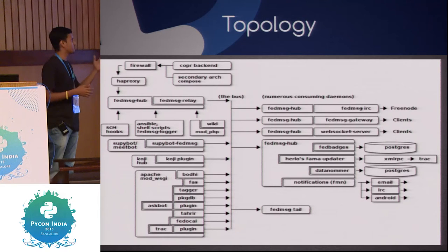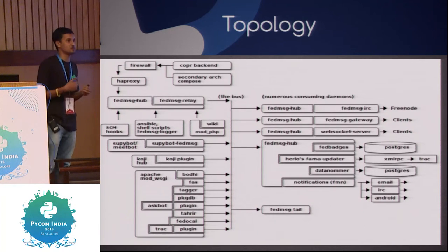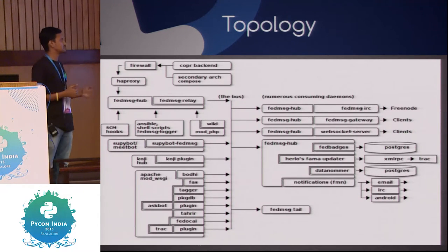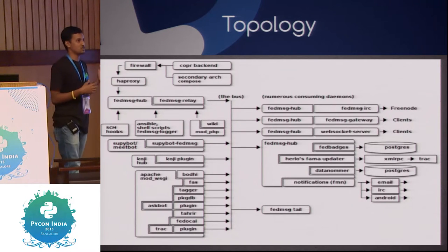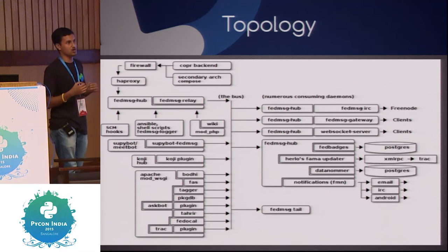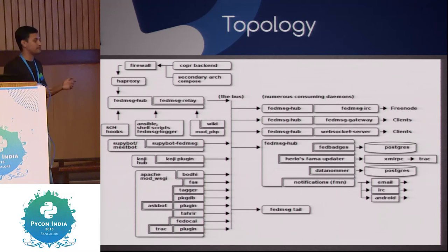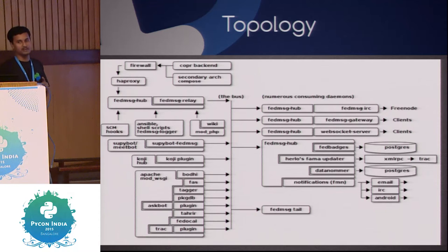We have a FedMessage IRC server — if you go to Freenode and connect to #fedora/fedmessage, you can see the number of messages coming every minute. Then we have FedBadges. Fedora has a FedBadges system where, based on some activity — suppose you've done a blog post — you get a badge. When somebody pushes a blog, it sends a message to the message bus and the FedBadges consumer checks if a badge can be awarded to that person.